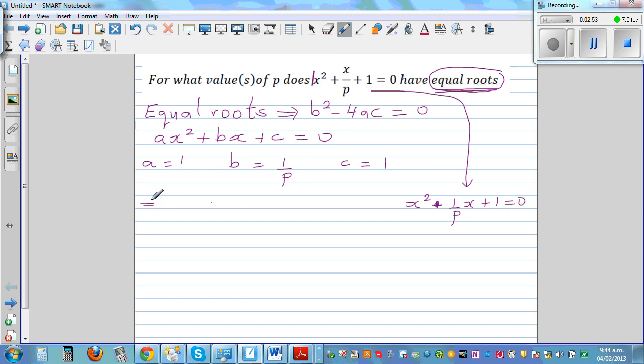So this implies that we just substitute a, b, and c in this formula, which is 1 over p the whole squared minus 4 times a, which is 1, times c, which is 1, is equal to 0. Which implies 1 over p squared minus 4 is equal to 0, which implies 1 over p squared is equal to 4.